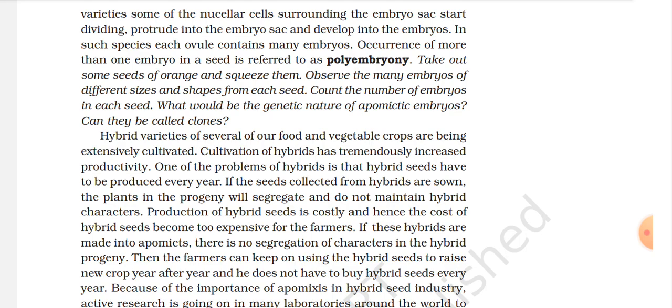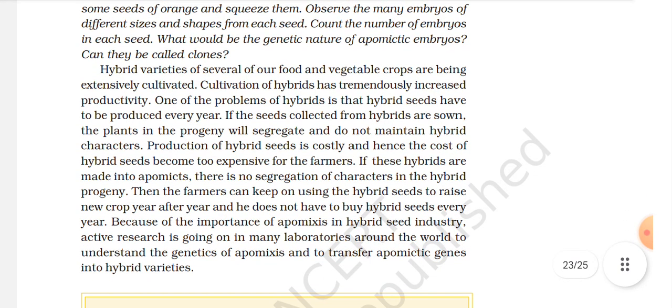Take out some seeds of orange and squeeze them; observe the many embryos of different sizes and shapes from each seed. Count the number of embryos in each seed. What would be the genetic nature of apomixis embryos? Can they be called clones? Hybrid varieties of several of our food and vegetable crops are being extensively cultivated, and cultivation of hybrids has tremendously increased productivity.